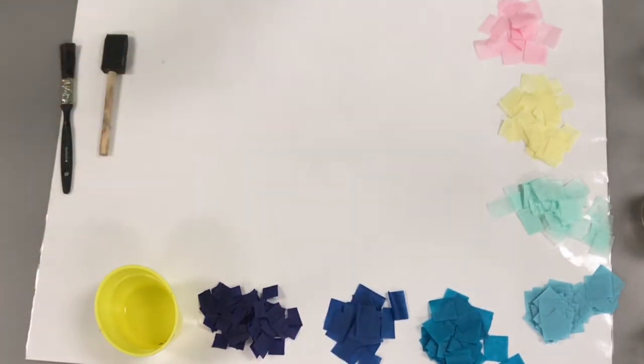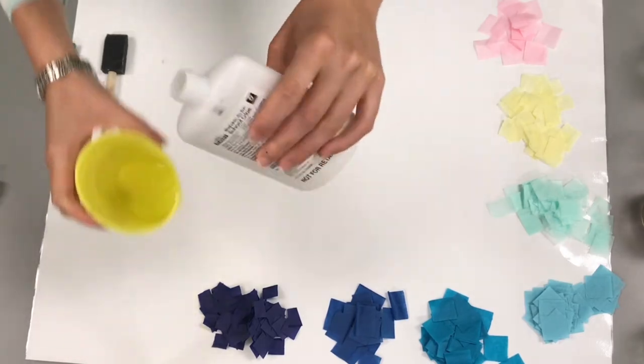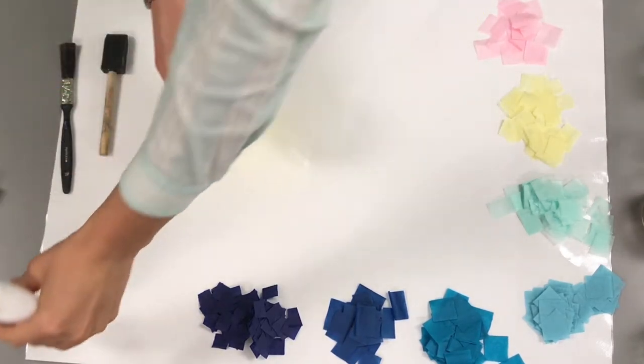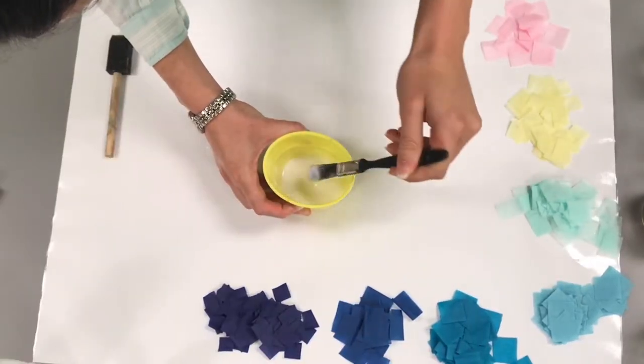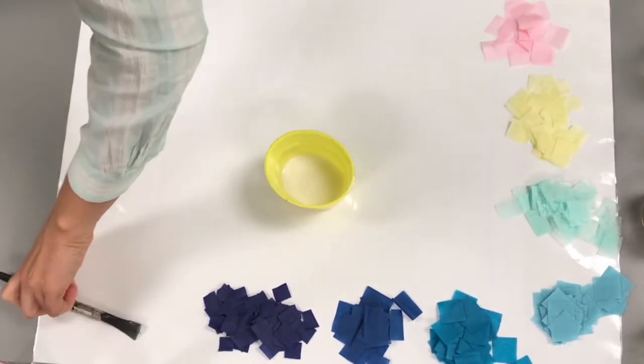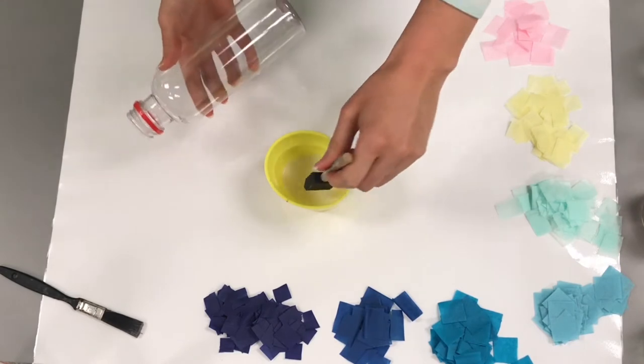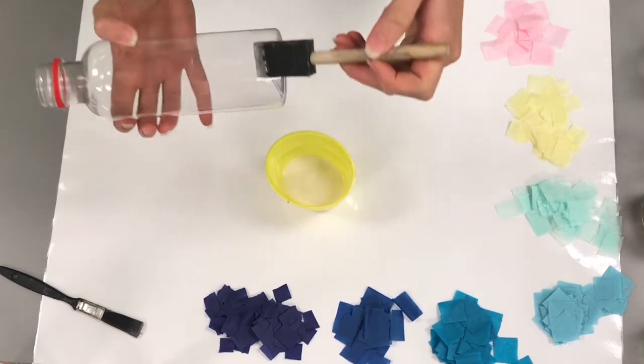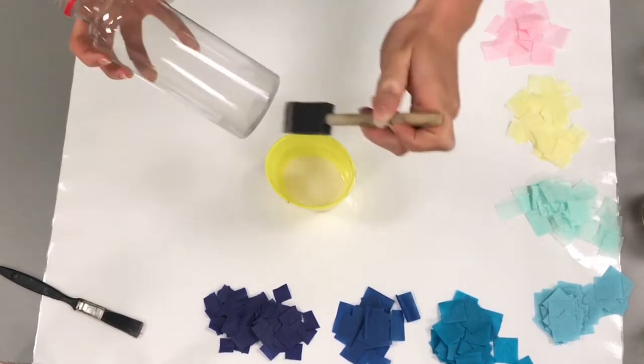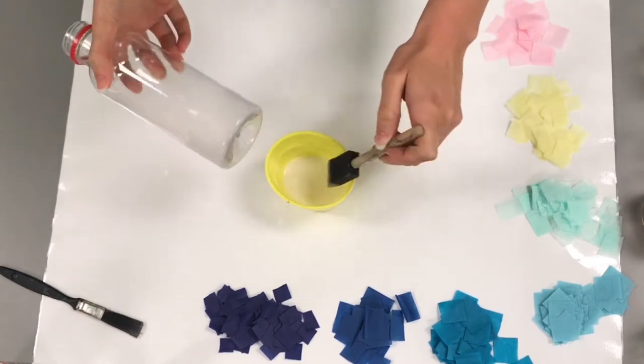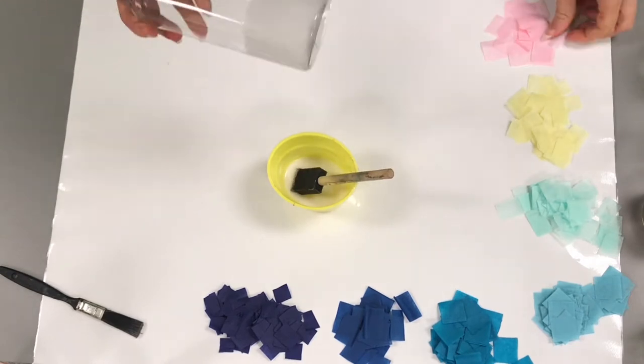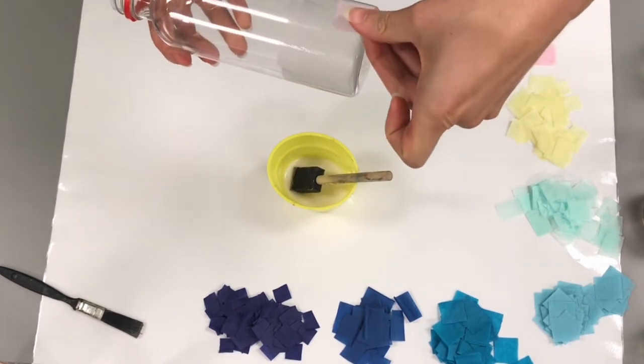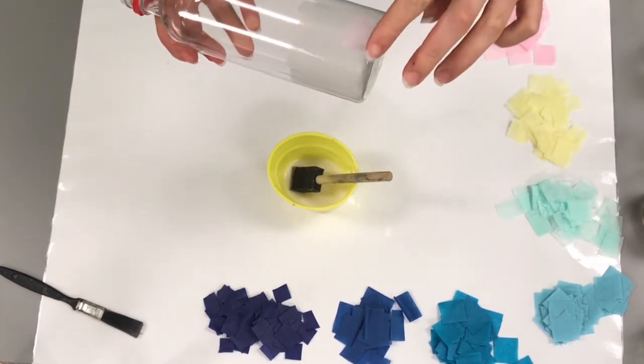I'm going to mix about equal parts glue and water. So the first thing is you're going to put a layer of glue where you want the first layer to go. I'll put down our first set of tissue paper.